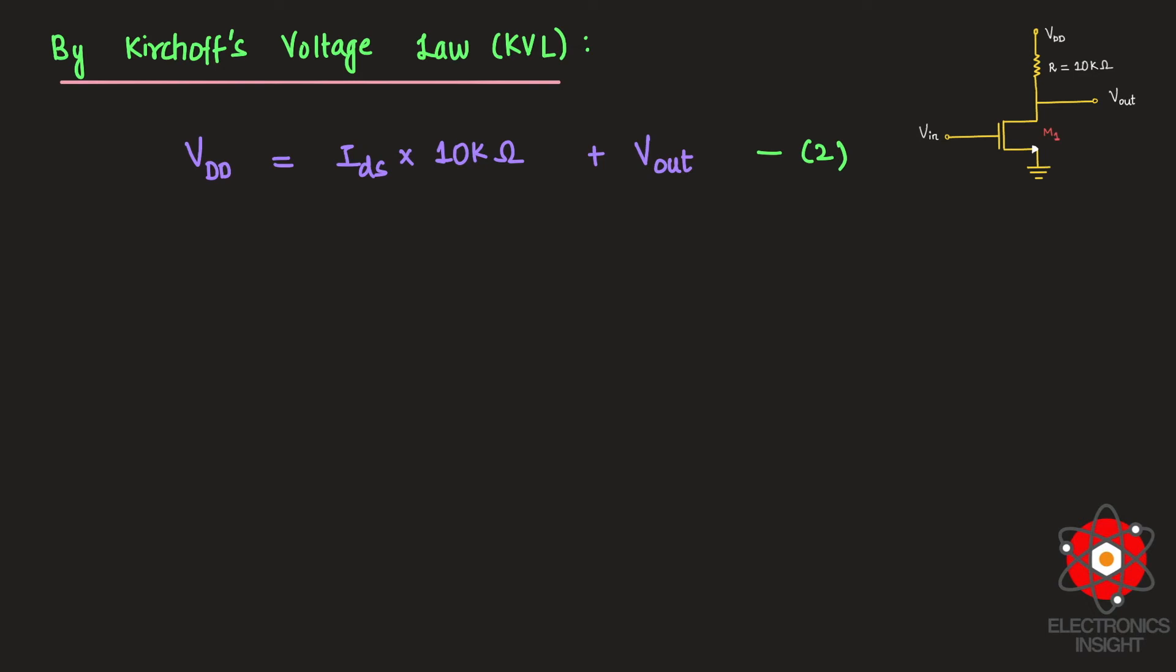Now we need to obtain what is this Vout so that we can get our input voltage for the particular transistor to enter into linear region. So let us do a small analysis here. We have 2 because our VDD is given as 2 volts.